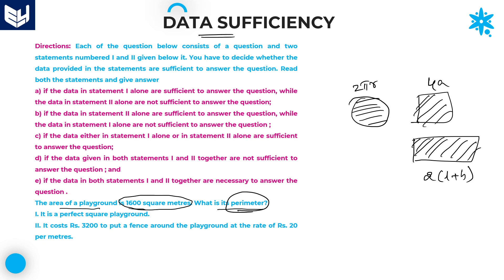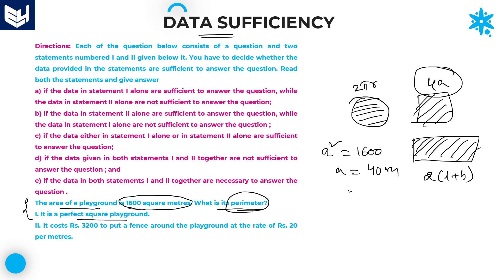The first statement says it is a perfect square playground. Using the given information and statement 1: area = a² = 1600, so a = 40 meters. Therefore perimeter = 4a = 4×40 = 160 meters. So you will get the answer by using statement 1 alone.